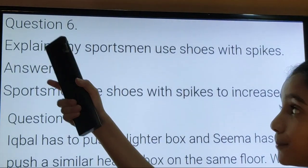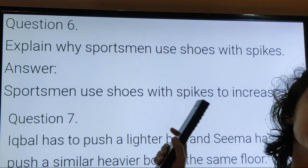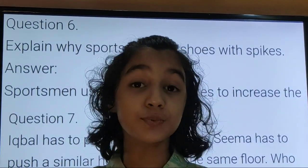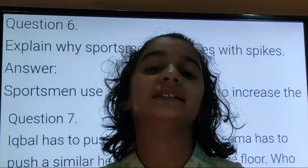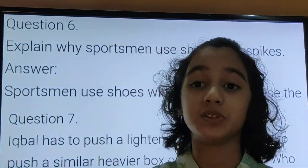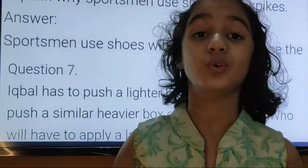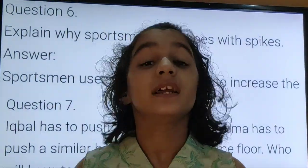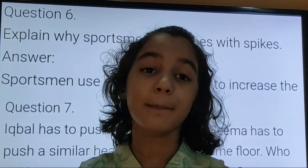Question number 6. Explain why sportsmen use shoes with spikes. Answer: Sportsmen use shoes with spikes to increase the friction between shoes and surface, so the shoes with spikes do not slip while sportsmen run and play.